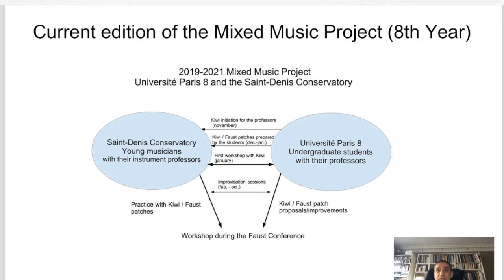Here is the new scheme of the mixed music project, showing its new organization for its eighth year — a particular year due to coronavirus, with an extended timeline from autumn 2019 to March 2021. We started in November 2019 with an introduction to Kiwi for the conservatory professors, then asked university students to prepare Kiwi and Faust patches in December 2019. The first workshop took place in January 2020 with Kiwi and Faust. Afterwards, we let people work together on these patches, with meetings class by class — piano classes, voice classes, and so on.